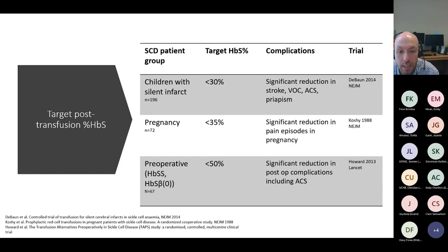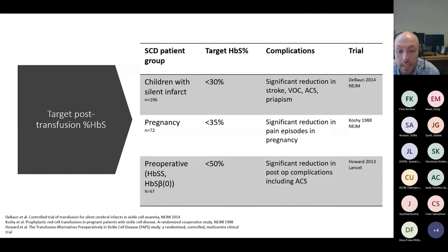There is no single hemoglobin S target that covers all indications. Studies have demonstrated a reduction in complications with various targets, and the hemoglobin S target depends on the indication for transfusion, the patient's disease severity, the severity of their current acute illness, and any organ dysfunction. A pragmatic approach is a target of hemoglobin S less than 30% for acute complications such as chest syndrome, stroke, and multi-organ failure.